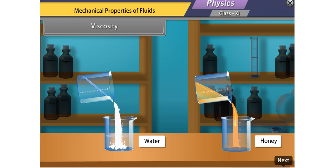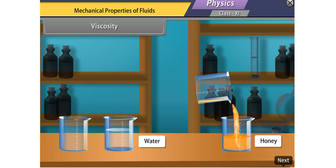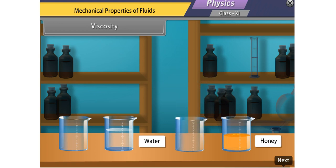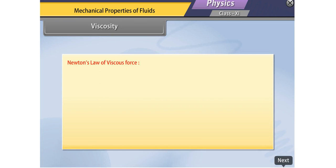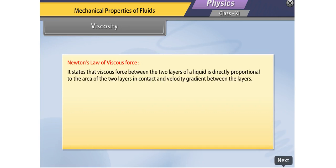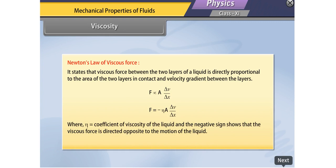Viscosity is defined as the property of a liquid by virtue of which an internal resistance comes into play that tries to destroy the relative motion between its layers. This internal resistance acts tangentially on the layers of the liquid. Newton's law of viscous force states that the viscous force between two layers of a liquid is directly proportional to the area of the layers in contact and the velocity gradient between them: F ∝ A(Δv/Δx), written as F = −ηA(Δv/Δx), where η is the coefficient of viscosity. The dimensional formula is ML⁻¹T⁻¹.